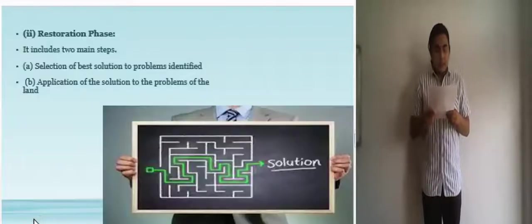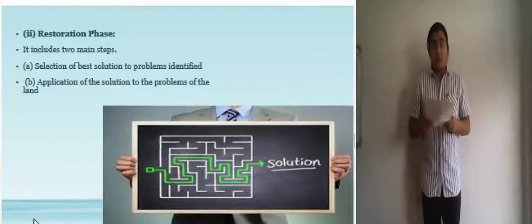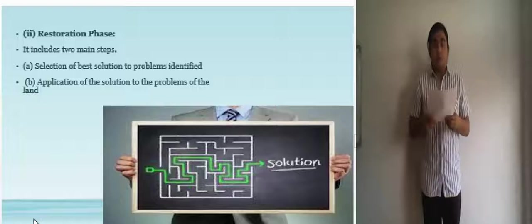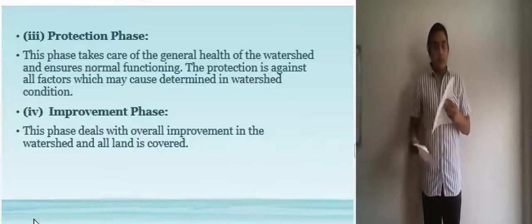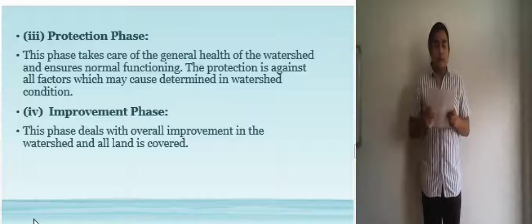Now for the restoration phase, it includes two main steps. The first one is the selection of the best solution to the problems identified. It must be economical, can be easily adapted by the locals and a long term solution. The next one is the application of the solution to the problems of the land. It must be based on the type of soil at hand and resources that are present.